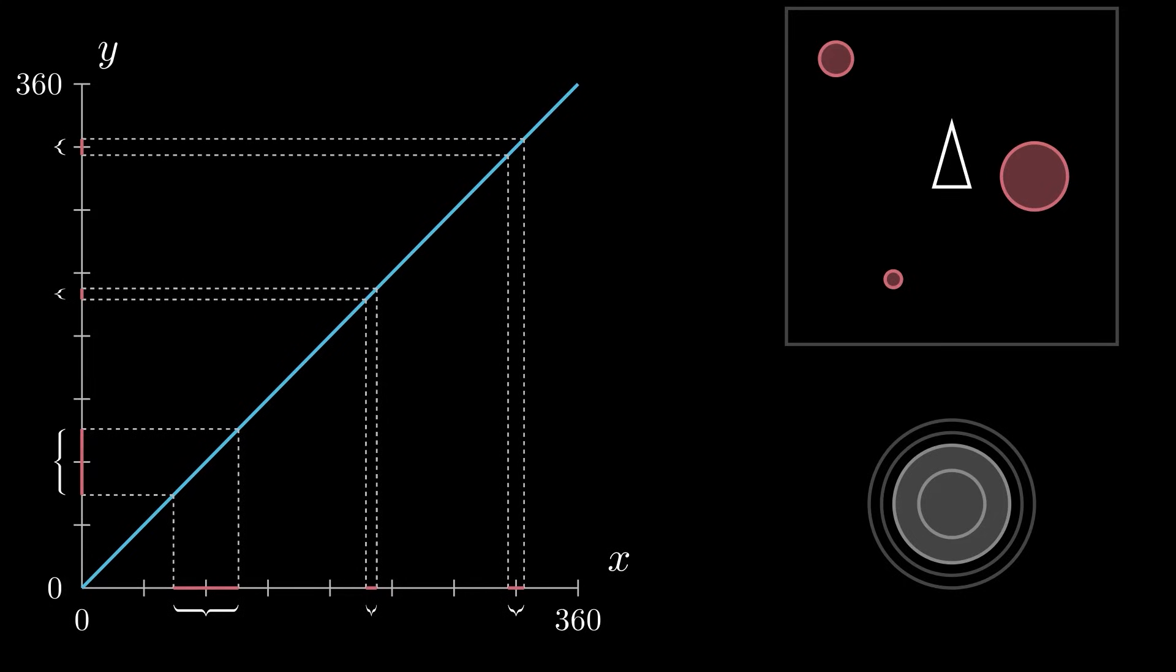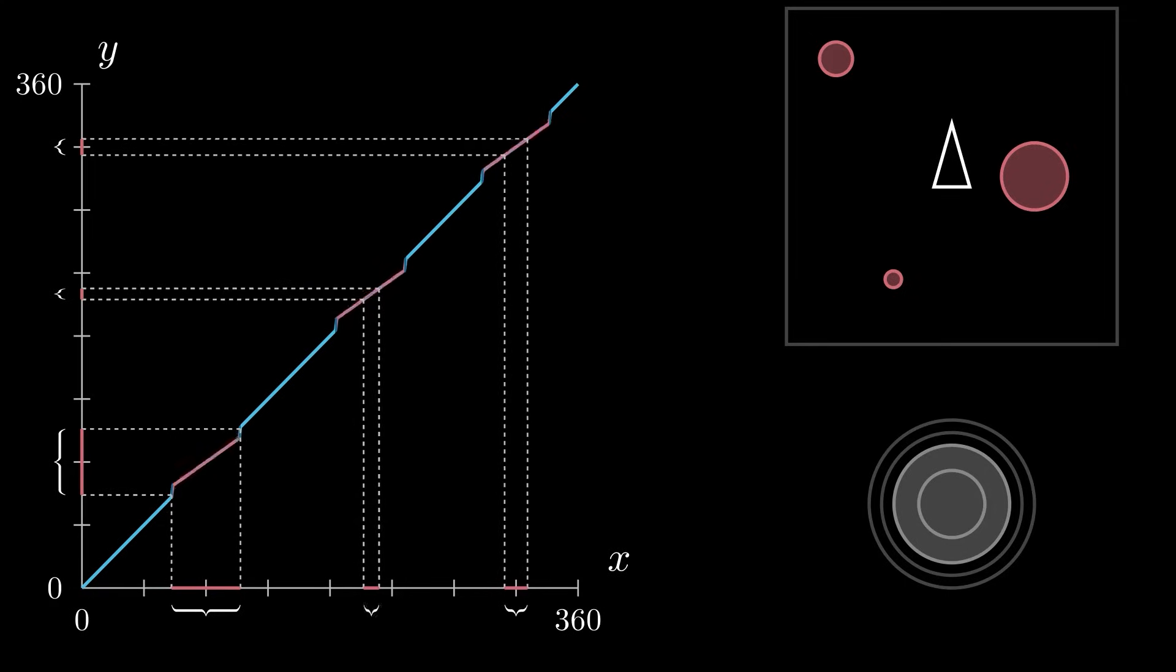As a point of comparison, the sort of direct snapping aim assist approach we've previously seen looks something like this in our visualization. We see that this indeed produces large virtual targets, which any useful aim assist function should do. However,